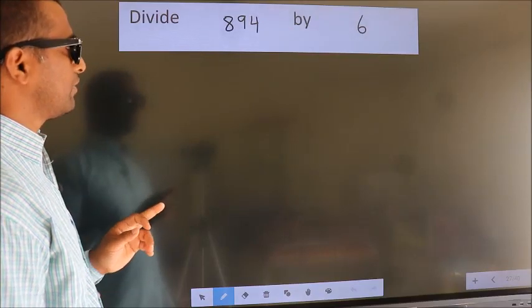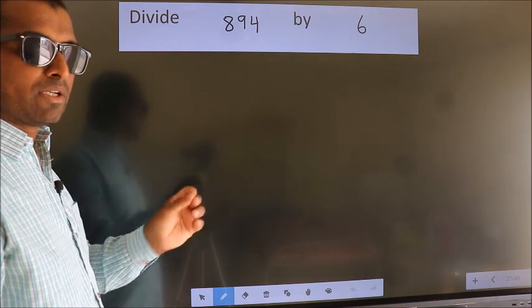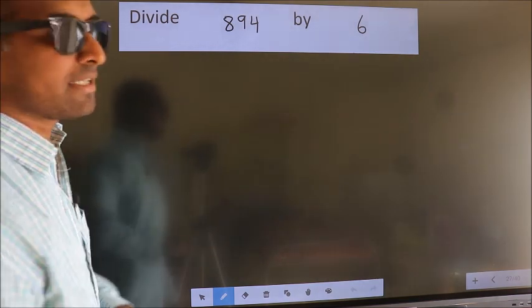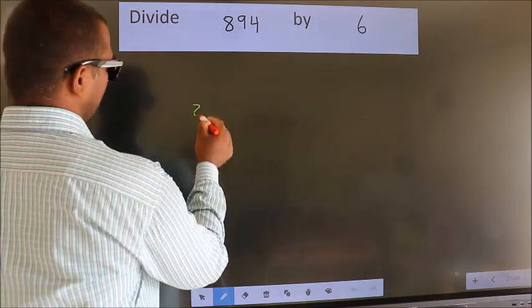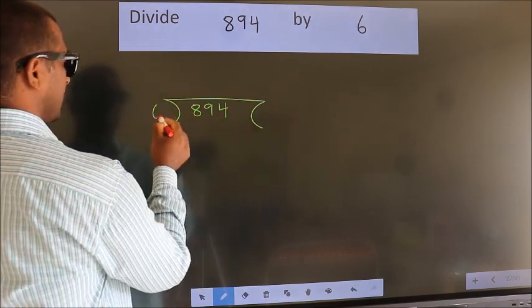Divide 894 by 6. To do this division, we should frame it in this way. 894 here, 6 here.